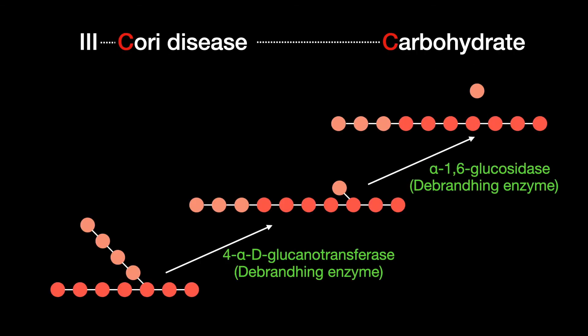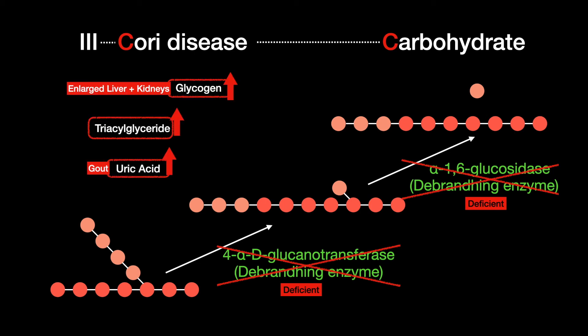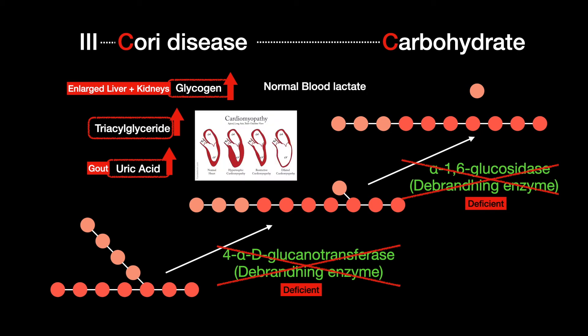Cori disease is the type 3 glycogen storage disease, caused by a deficiency of both debranching enzymes: 4-alpha-glucanotransferase and alpha-1,6-glucosidase. The findings are similar to Von Gierke disease; however, the symptoms are less severe and blood lactate levels remain normal. Unlike Von Gierke disease, cardiomyopathy can occur.